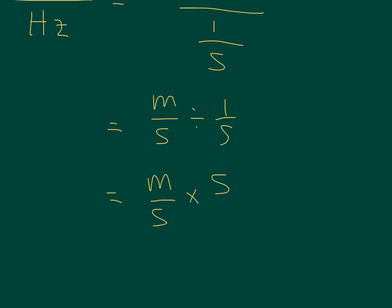we can flip the second fraction and turn it into multiplication. And now we've got meters per second times seconds over 1. You've got seconds on the top and seconds on the bottom, and you are simply left with meters,